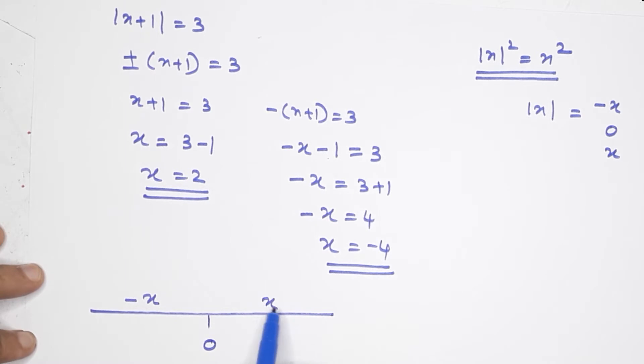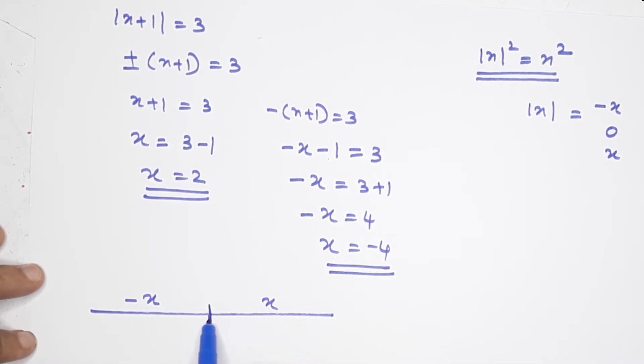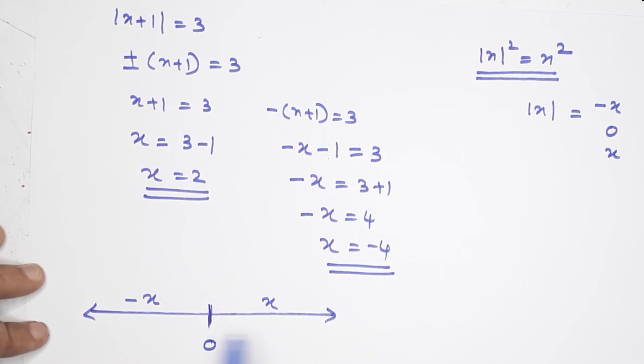There are mostly positive numbers, mostly negative numbers, and one is zero. Now there are three parts on our number line.